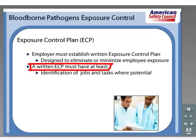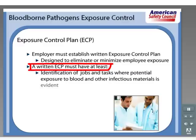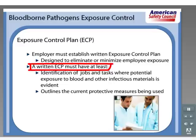Identification of jobs and tasks where potential exposure to blood and other infectious materials is evident. Outlines the current protective measures being used. The procedure for the evaluation of circumstances surrounding exposure incidents as required by OSHA regulations. Employers must ensure that a copy of the exposure control plan is accessible to employees in accordance with the appropriate OSHA standards.